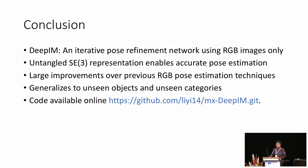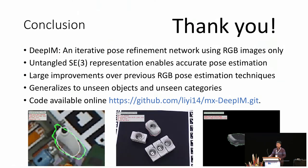In conclusion, in this work we proposed framework DeepIM, which is an iterative pose refinement network using RGB images only, and a novel untangled SE(3) representation for accurate pose estimation. We make large improvement over previous RGB-based pose estimation methods. We also show our method generalizes to unseen objects and unseen categories. Thank you.